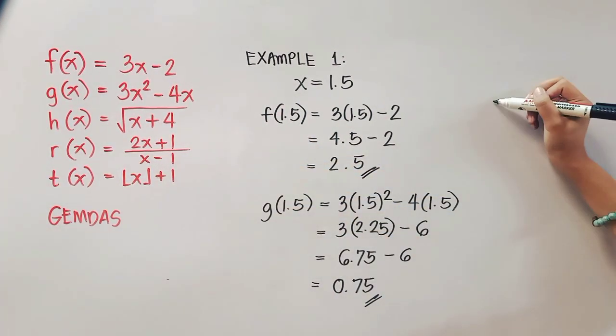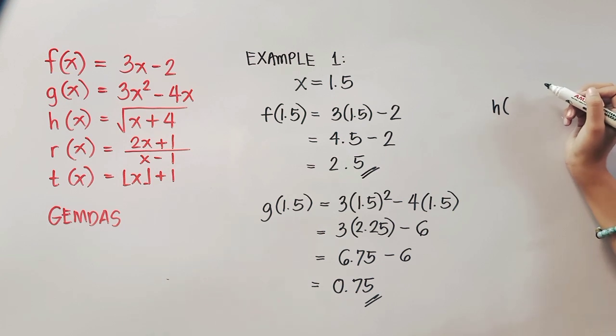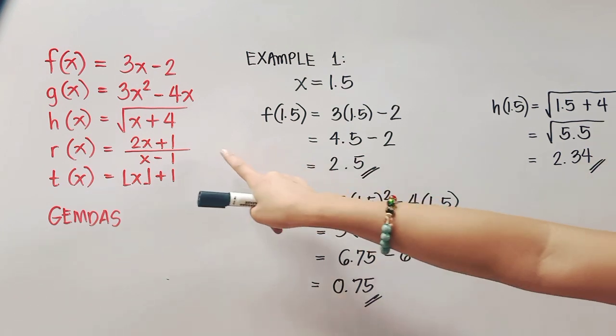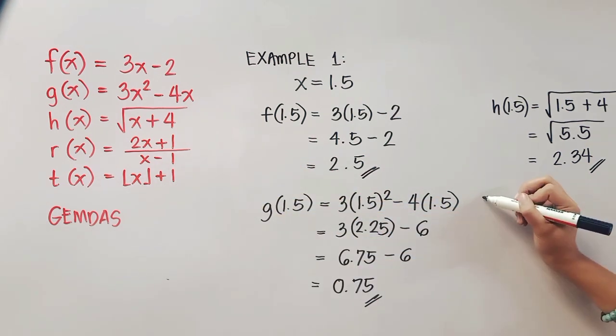Now let's start with h of x. Again, that's h of 1.5. So you will simply copy and then substitute the value of x, square root of quantity 1.5 plus 4. Adding that, we'll have 5.5. Using your calculator, that will give us 2.34, and that is our final answer.